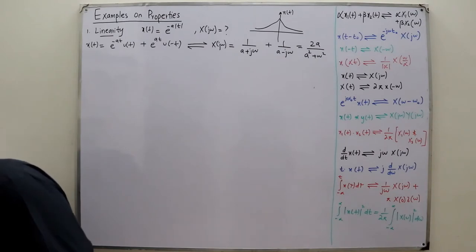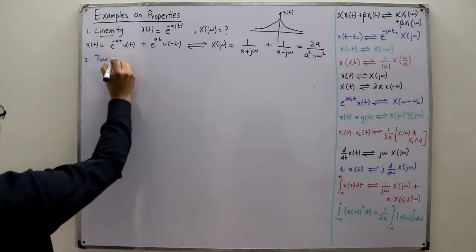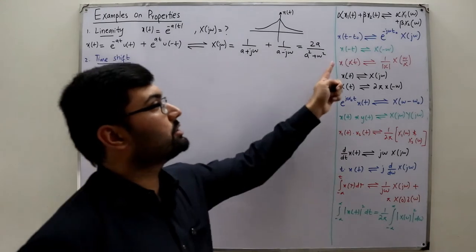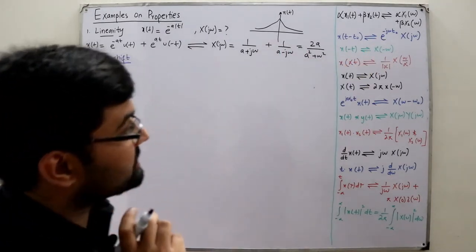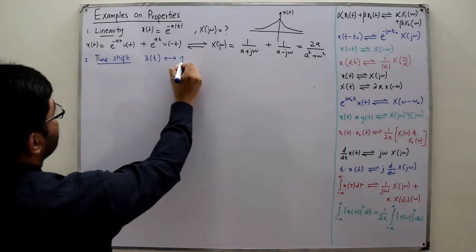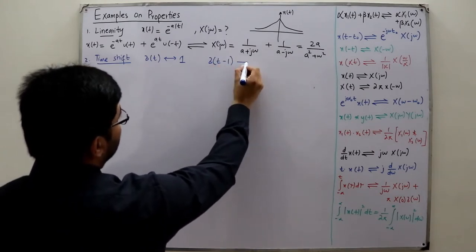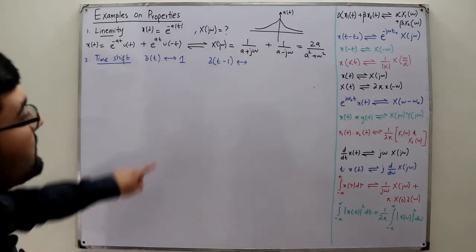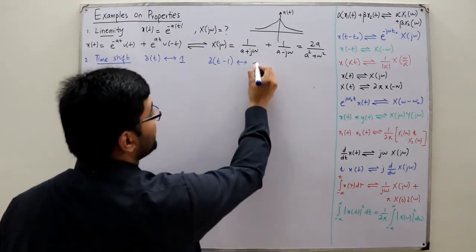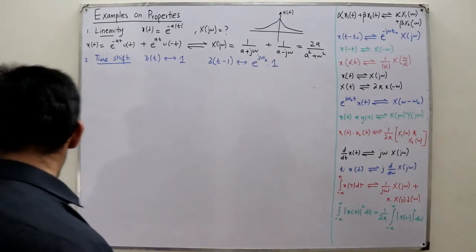The second property is the time shifting property. If you shift a signal x(t - t₀), a complex exponential is multiplied in the frequency domain. For example, the Fourier transform of δ(t) is 1. If I have a shifted signal δ(t - 1), then t₀ = 1 and the corresponding Fourier transform is e^(-jω·1), which equals e^(-jω).